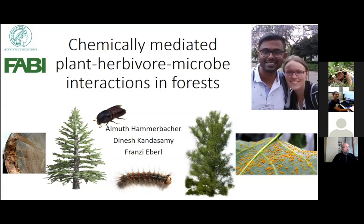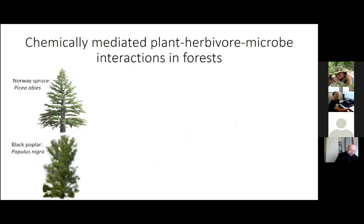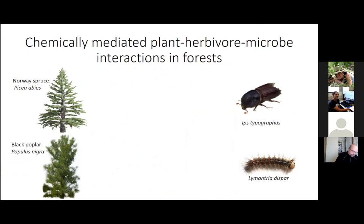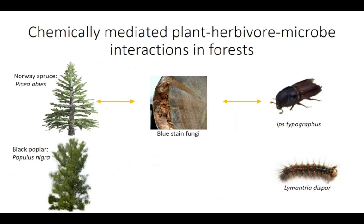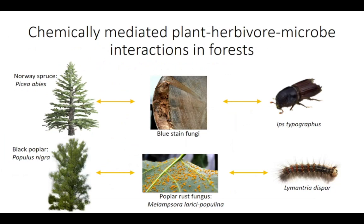The two tree species we will be dealing with today are the Norway Spruce Tree and the Black Poplar. These two species are occasionally attacked by the bark beetle Ips typographus or the Gypsy Moth caterpillar, respectively. In the case of the bark beetle, it inoculates the tree with one or more associated blue-stained fungi during its attack, which then discolor the bark and wood of the host.